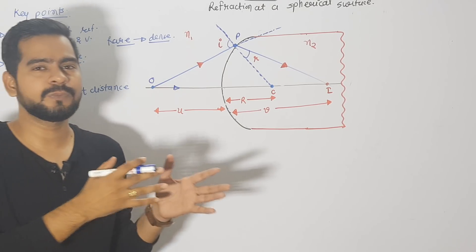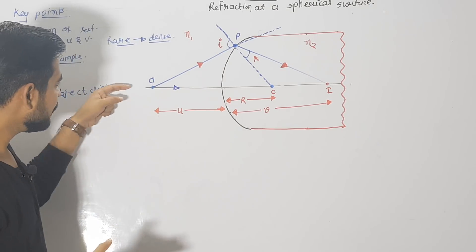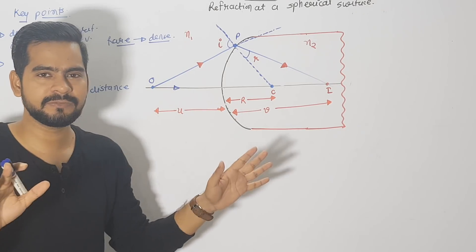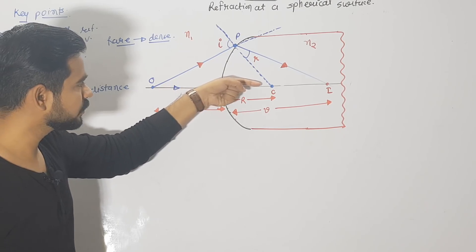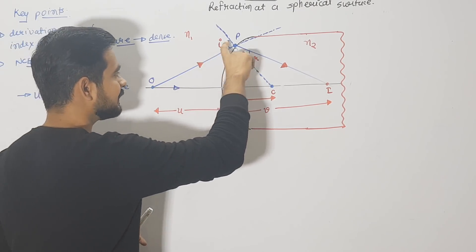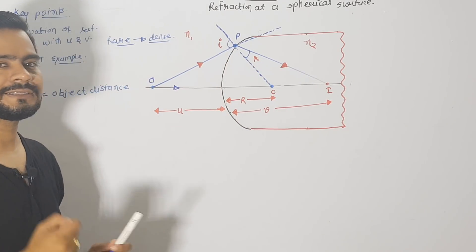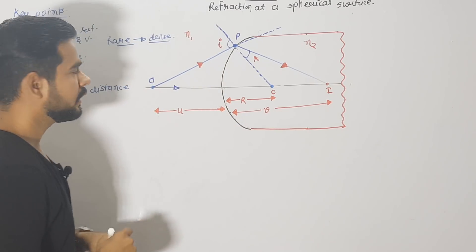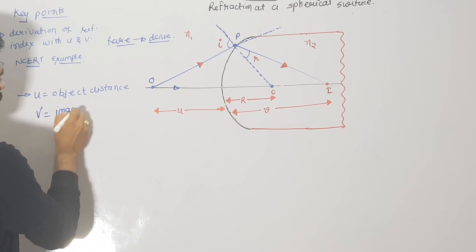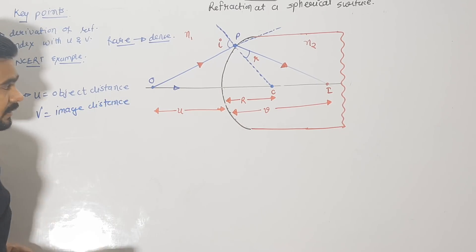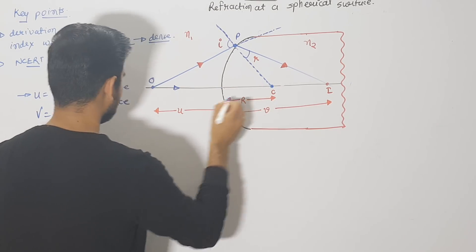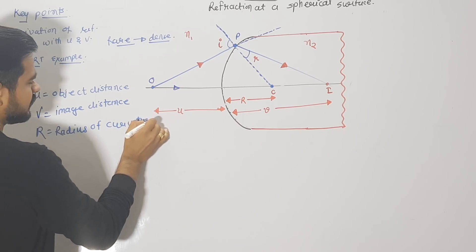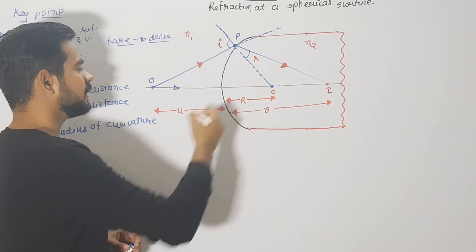Any ray passing directly through the optical center or pole undergoes zero refraction and travels straight ahead. When the two refracted rays meet, that meeting point is the image of the object. From the pole to that point is V, your image distance. Also, from the pole to C is capital R, the radius of curvature — C is the center of curvature, so this distance is your radius of curvature.